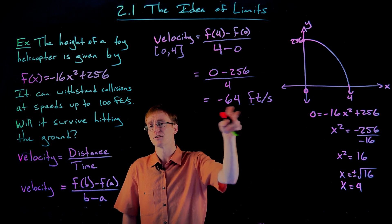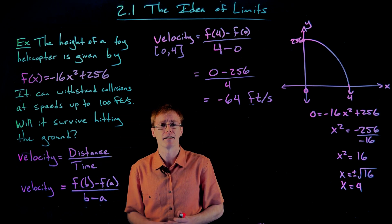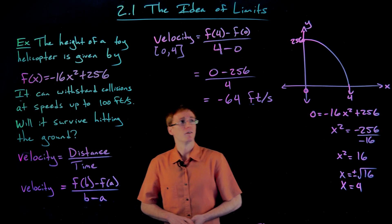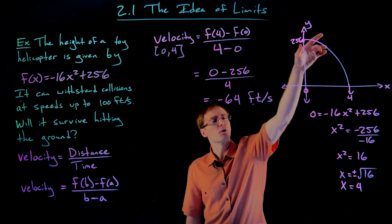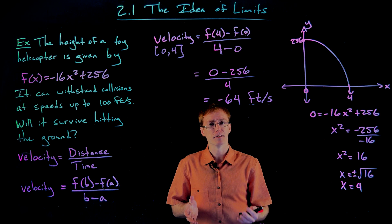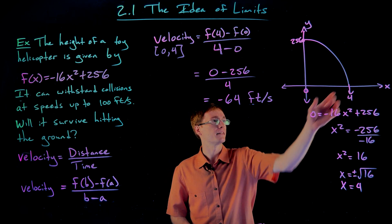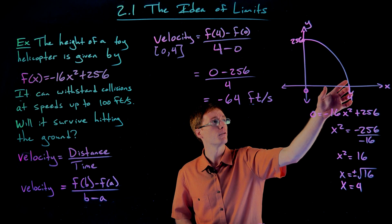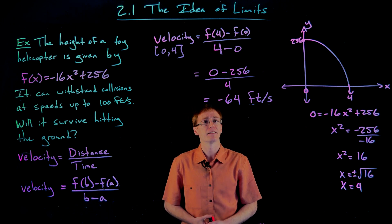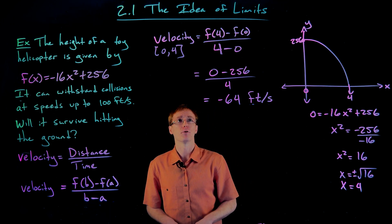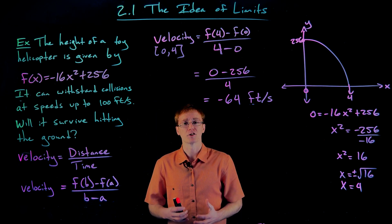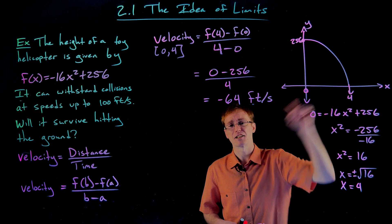How much faster is what we need to determine, because if it's over 100 feet per second, the helicopter won't survive. During the early parts of the interval it's not falling as fast, which lowers our average. In the second half of the interval it's moving much faster after more time to accelerate. So let's find the average velocity over just the second half of the interval for a better approximation.